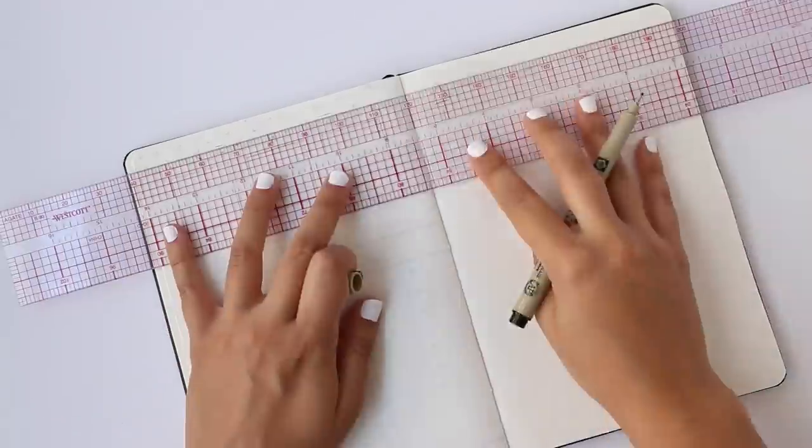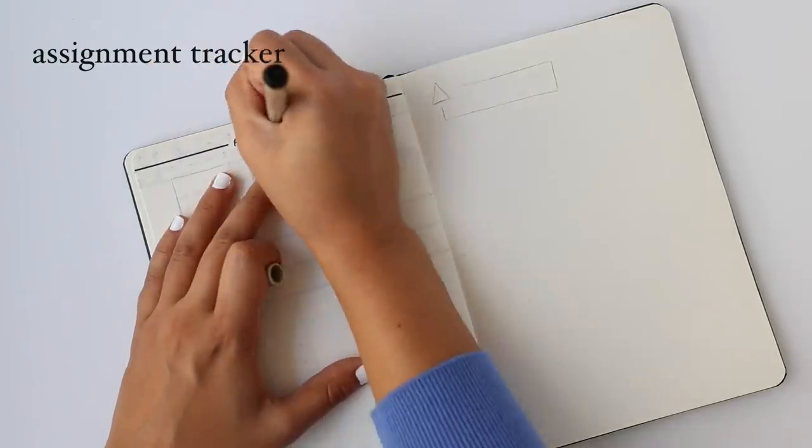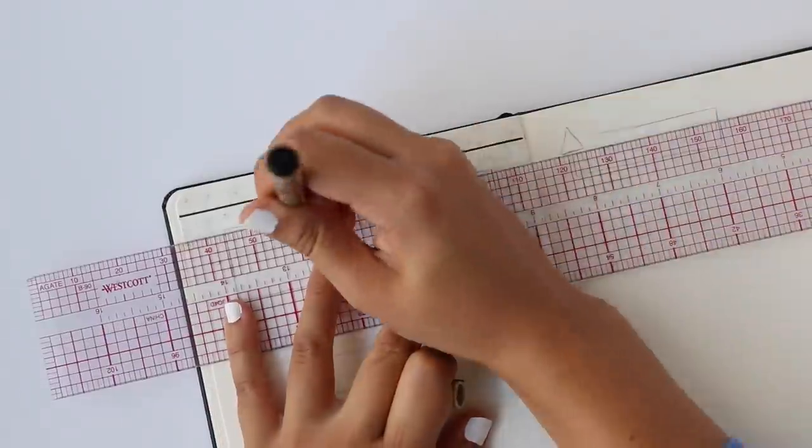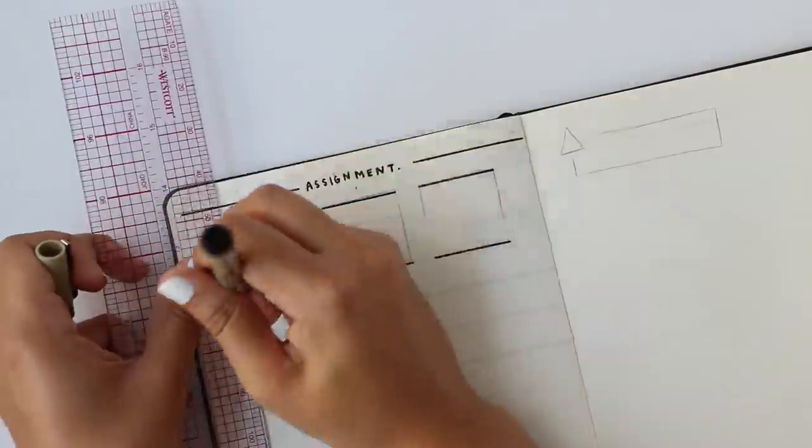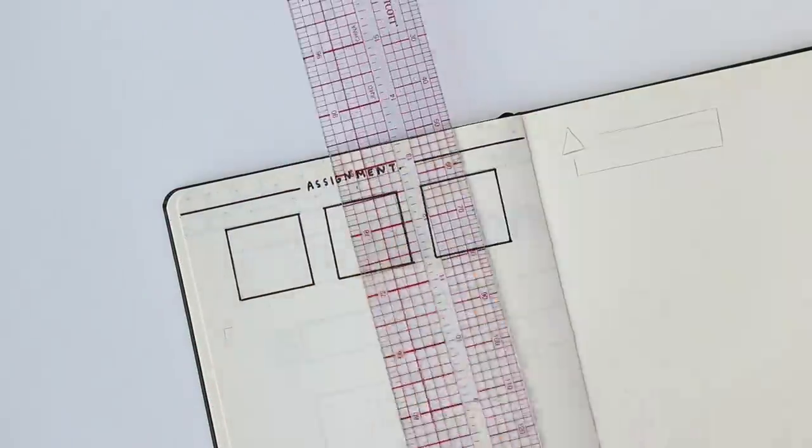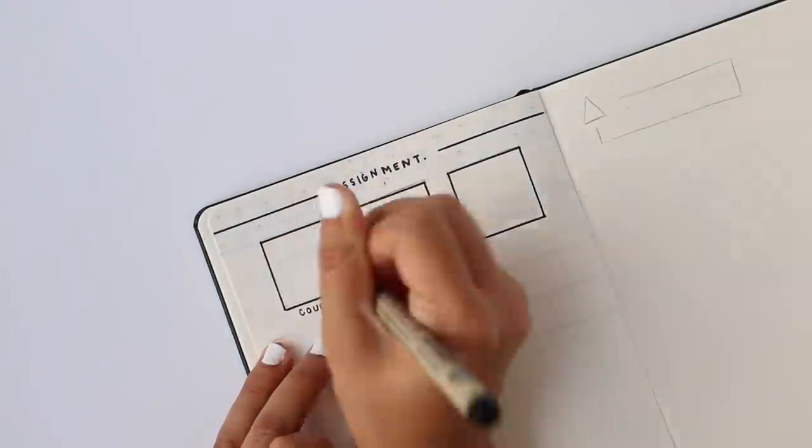This next spread is an assignment tracker which honestly has almost the exact same elements that my study planner has, but it's just a slightly different layout. So you could use either or for tasks.